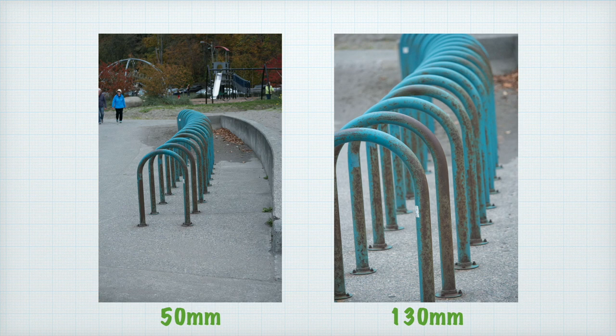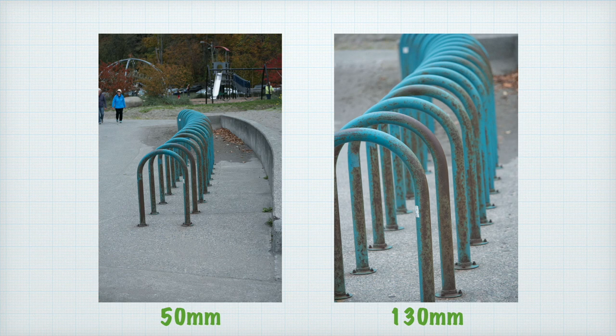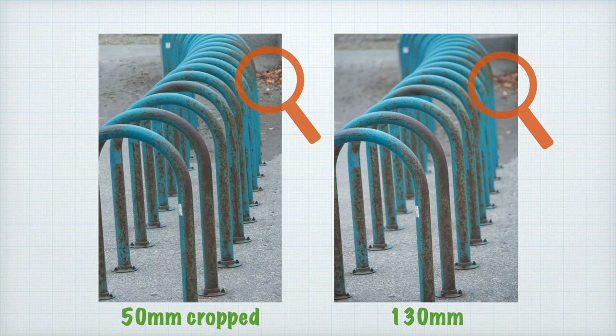From the same camera position, a short lens will give more depth of field than a longer lens, but the short lens is also providing a much smaller subject in the frame. Here are two photos made with a 50mm lens and a 130mm lens from the same camera position. The 50mm photo has more depth of field, as you can see in the leaves, but they are smaller. When the 50mm image is enlarged to match the 130mm photo, the depth of field is still greater with the shorter lens, but the resolution is lost.